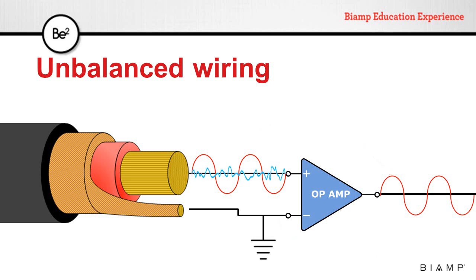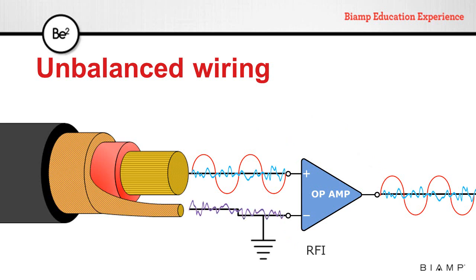When electromagnetic interference reaches this cable, it will affect the central conductor, generating noise. This noise will go through the operational amplifier and will be present in the signal after the input stage. Radio frequency interference can reach the outer shield, but since this is also connected to the operational amplifier, it will go through with the audio signal and will be mixed with it. So unbalanced cables are susceptible to both electromagnetic interference and radio frequency interference.